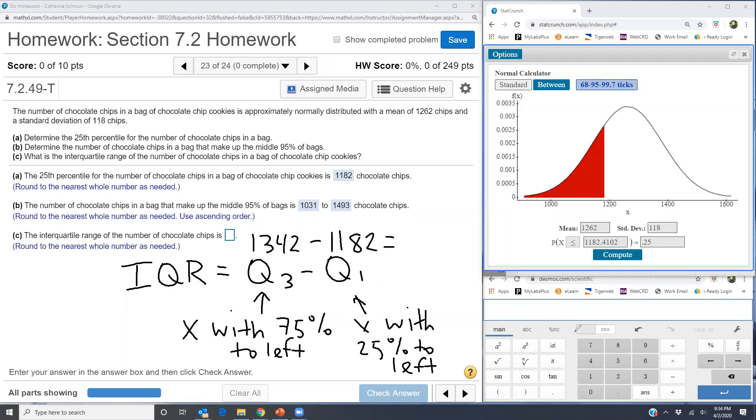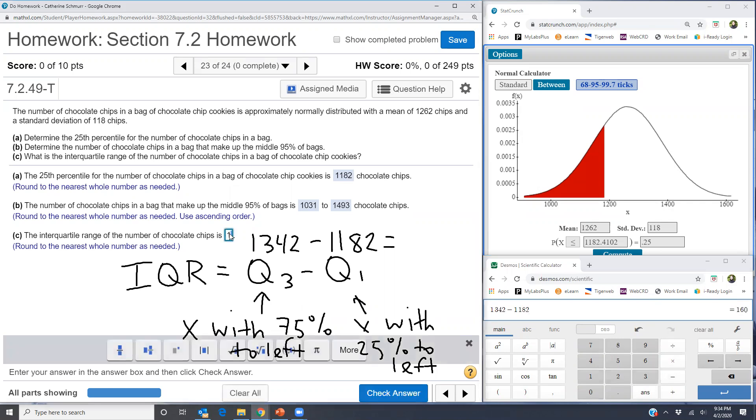And when I subtract those, I'll just pull up a regular calculator here. So I have 1342 minus 1182. And that's 160. So that should be my answer here. 160.